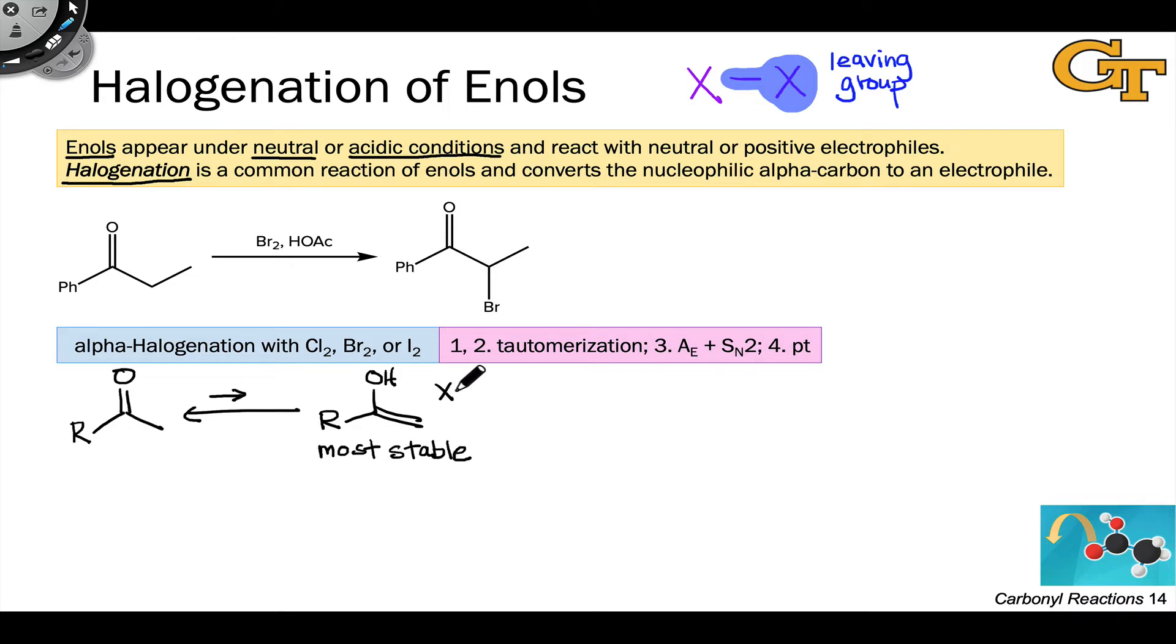After this tautomerization process generates the enol intermediate, the nucleophilic enol reacts with the electrophilic X2 compound, elemental halogen. This occurs through coordination of the pi electrons of the enol to the electrophilic X atom and cleavage of the X-X bond toward the other halogen atom. We can think of this as an A sub E step, association of an electrophile from the perspective of the pi system of the enol, and an SN2 step from the perspective of the elemental halogen. We can also draw an additional curved arrow here so that the resonance form we end up with satisfies the octet rule. This avoids a carbocation forming at this carbon here.